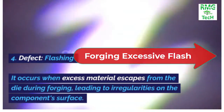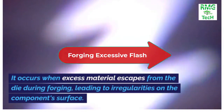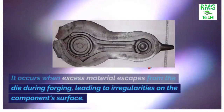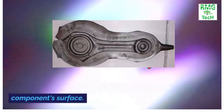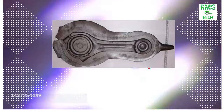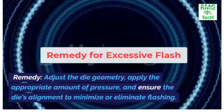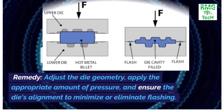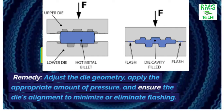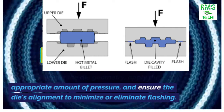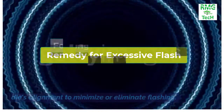Defect 4: Flashing. It occurs when excess material escapes from the die during forging, leading to irregularities on the component surface. Remedy: Adjust the die geometry, apply the appropriate amount of pressure, and ensure the die's alignment to minimize or eliminate flashing.